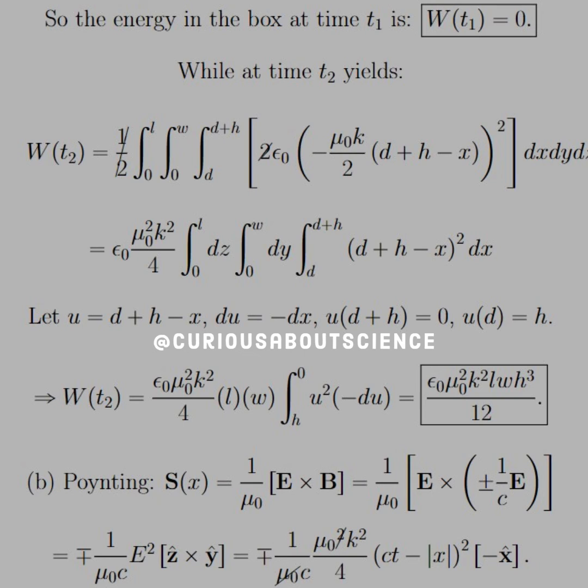And we get epsilon naught, mu naught squared, K squared, L, W, H cubed over 12 as a result. You don't really need to do the U sub, but it helps. You can use any number of calculators online.